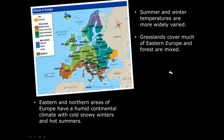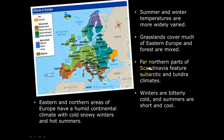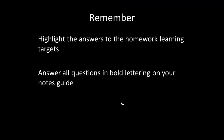The far northern parts of Scandinavia feature sub-arctic and tundra climates — it gets very cold there. In Iceland, winters are bitterly cold and summers are short and cool, similar to Alaska, northern Canada, or parts of the northern United States. Remember to highlight the answers to your homework learning targets and answer the bold questions on your notes guide. Have a great day — see you in class.